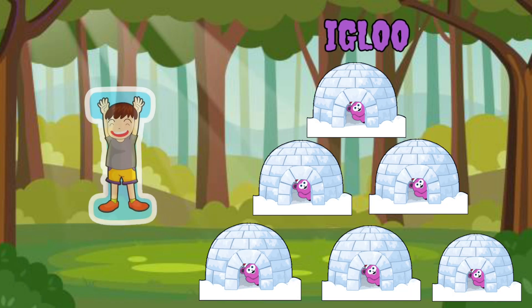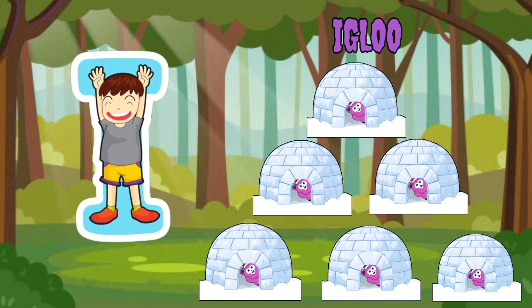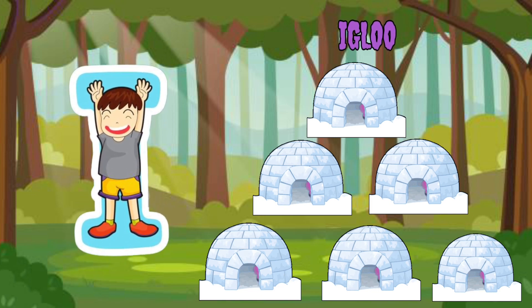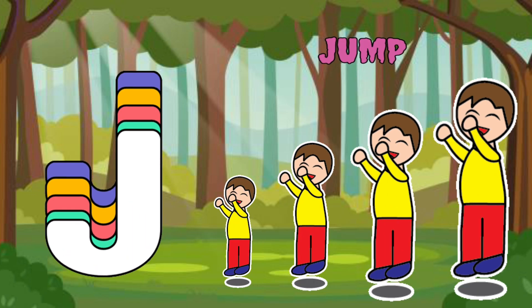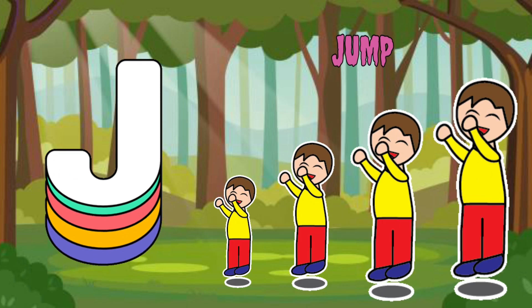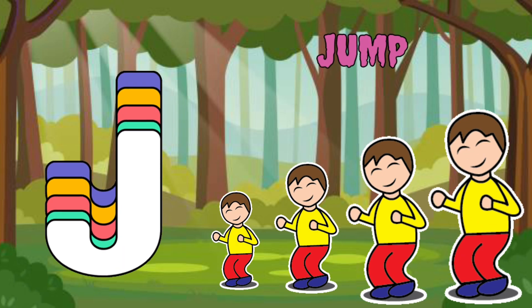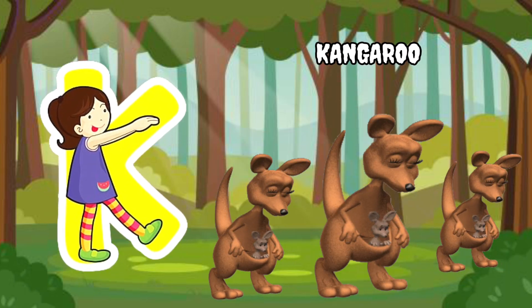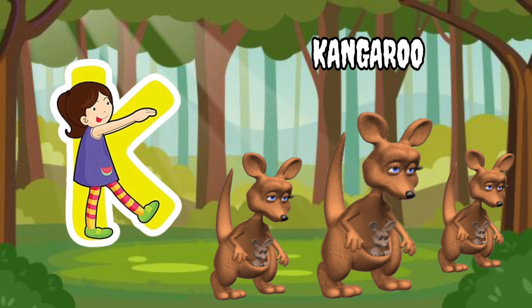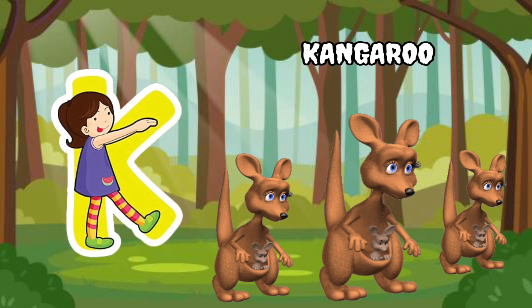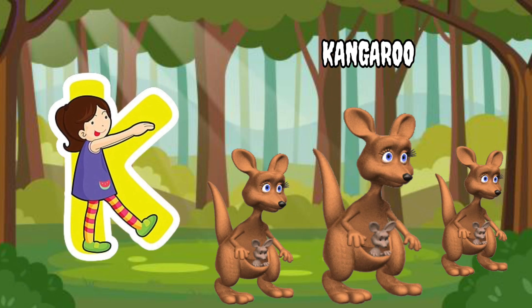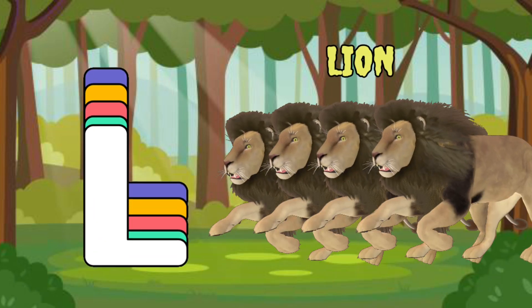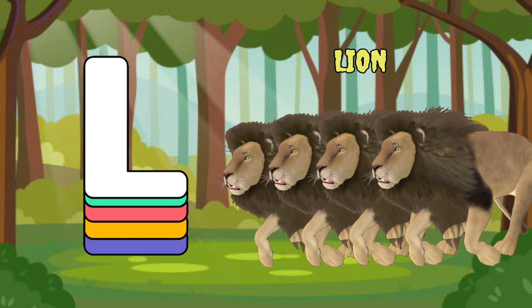I is for igloo, i-i-igloo. J is for jump, j-j-jump. K is for kangaroo, k-k-kangaroo. L is for lion, l-l-lion.